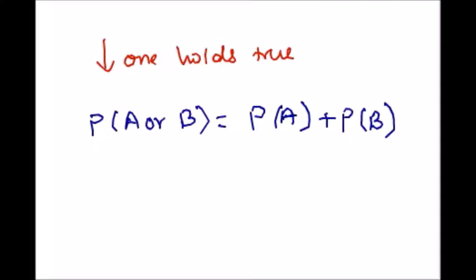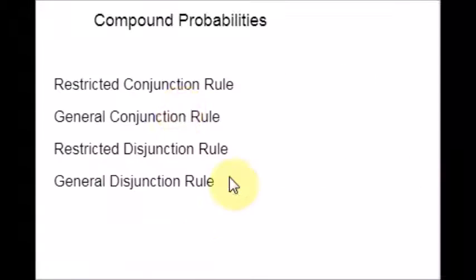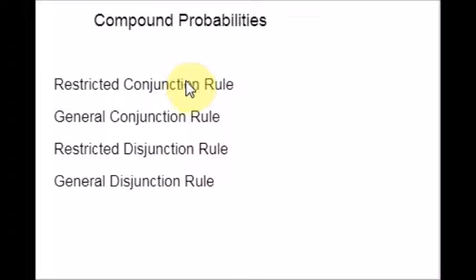Based on the restriction, you can categorize compound probability into four types: first, restricted conjunction rule; second, general conjunction rule; third, restricted disjunction rule; and fourth, general disjunction rule. Now let us see the appropriate rules and restrictions along with the examples for each of the rules.